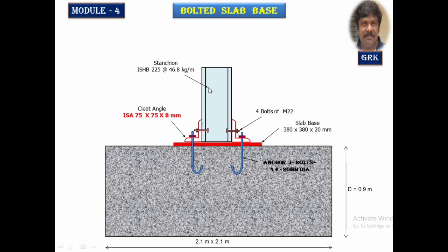Looking at the final elevation view of the base slab along with the concrete block: you can observe the anchor bolts — J-type bolts inserted in a tube-like structure called a ferrule. Four numbers of 20 mm diameter bolts are provided. The nominal angle visible is ISA 75 × 75 × 8 mm, connected by bolts on each side of the stanchion.